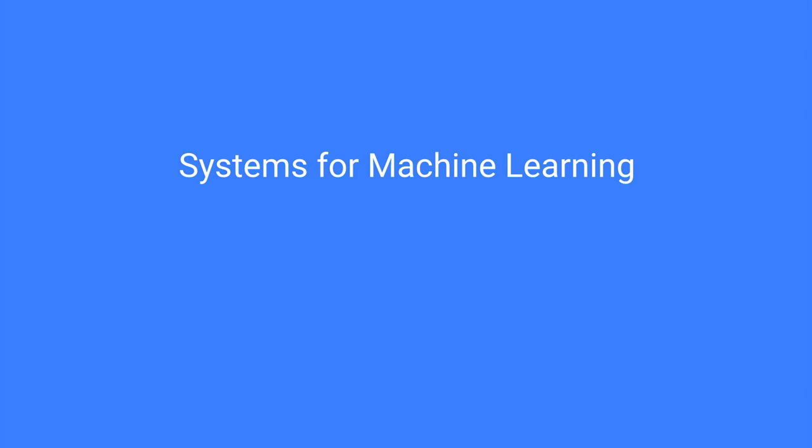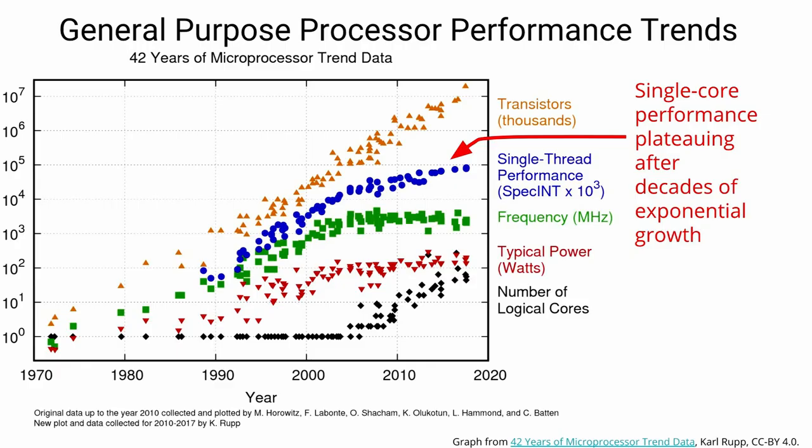The motivating reason why this is really important, as highlighted by Bill's talk earlier, is essentially that single-thread performance for traditional integer code has been slowing down for a long time—or rather, not speeding up at the rate it was for many years. For the last eight or ten years, we've essentially not gotten the nice Moore's Law performance boost every year that we've become accustomed to.